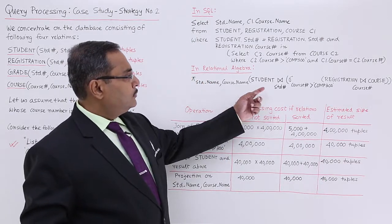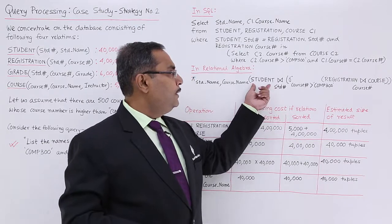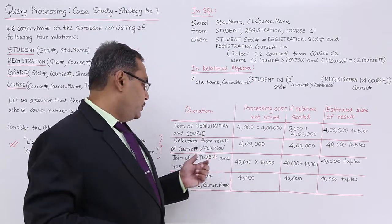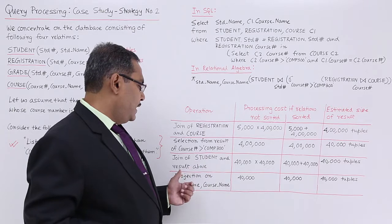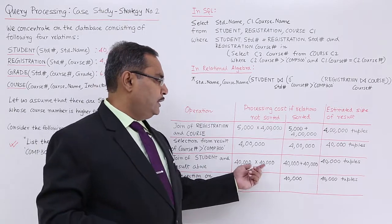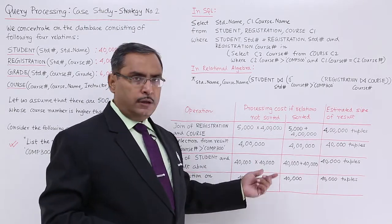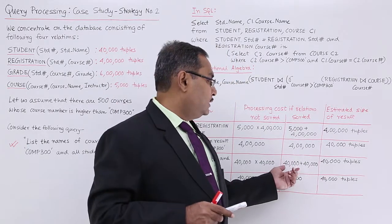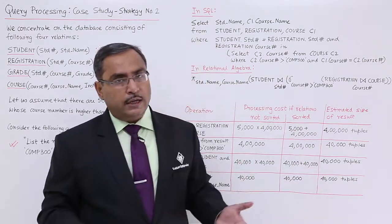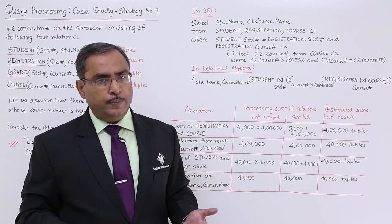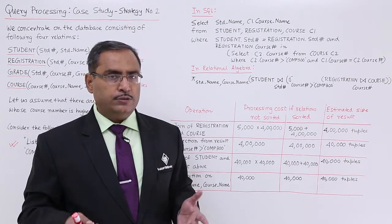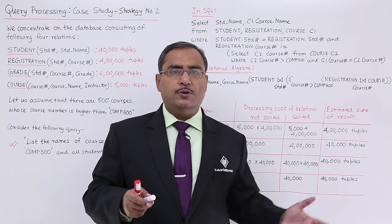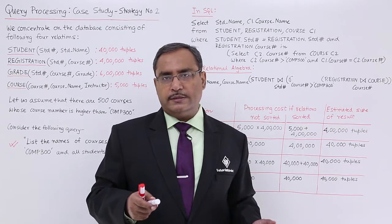This part is done. Now we do the natural join with the student table. We join student with the result above: 40,000 into 40,000 if not sorted, or 40,000 plus 40,000 if sorted, since the student table also has 40,000 tuples. The resultant relation will be 40,000 tuples, and the attributes increase because the student attributes are added to the resultant table.